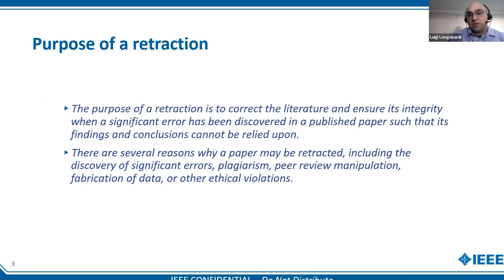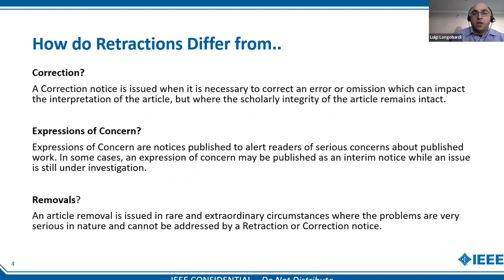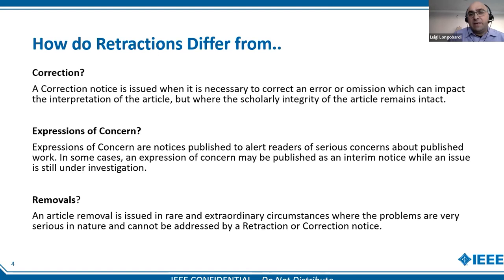The bottom line is that we are trying to improve our quality controls and be transparent about how and why we are correcting the scholarly record, because we believe that transparency is the key to improving public trust in science. We see the purpose of retraction as correcting the literature and ensuring its integrity when a significant error has been discovered in a published paper such that its findings and conclusions cannot be relied upon. Other reasons why a paper may be retracted include ethics violations like plagiarism, peer review manipulation, and fabrication of data. We do not issue a retraction lightly — before we issue one, we also consider other options, explore if a correction may be sufficient, or try to issue an expression of concern if an investigation is taking a long time and there are serious concerns about the integrity of the paper.